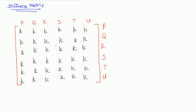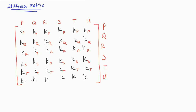I'm going to label all the rows based on the degrees of freedom. So the entire first row is the P row — KPP, KPQ, KPR, KPS, KPT, KPU. The next row is Q, then R, then S, then T, then U — filling in all 36 K values across the six rows.